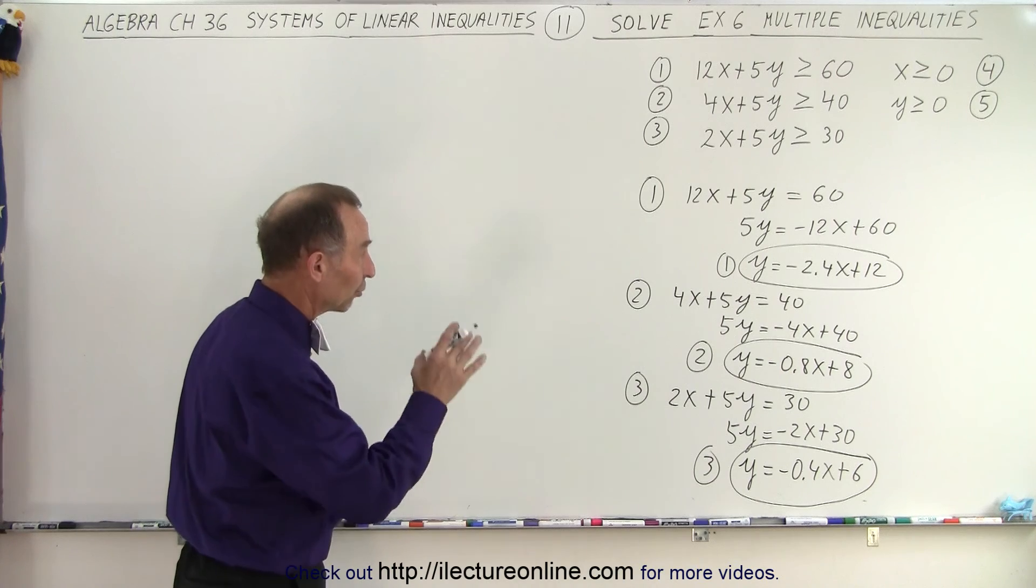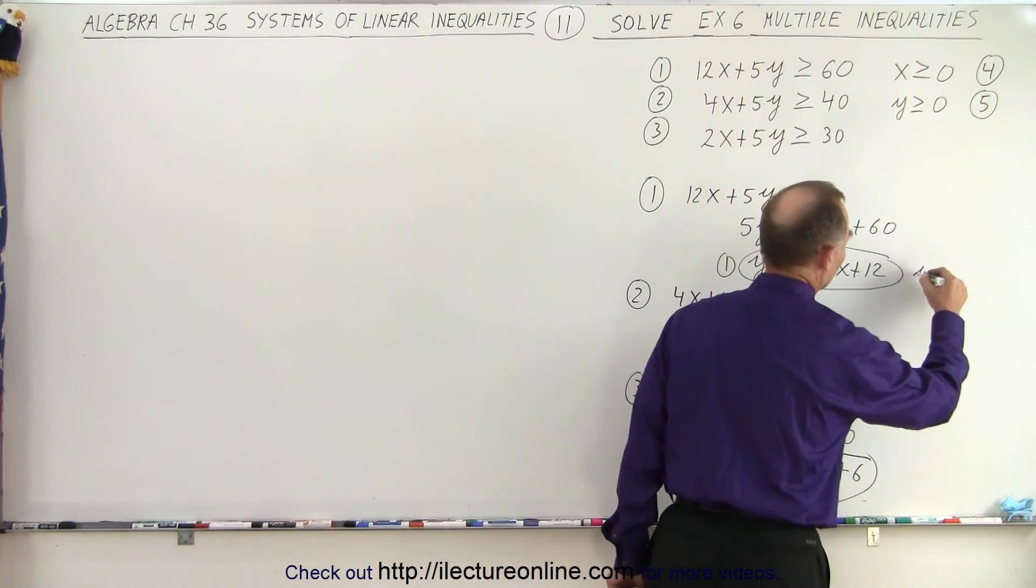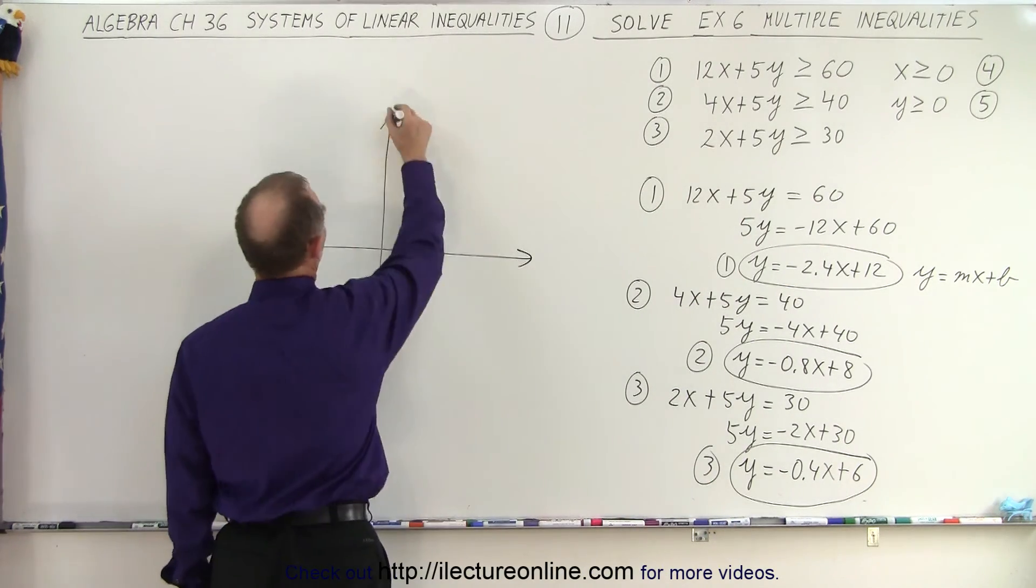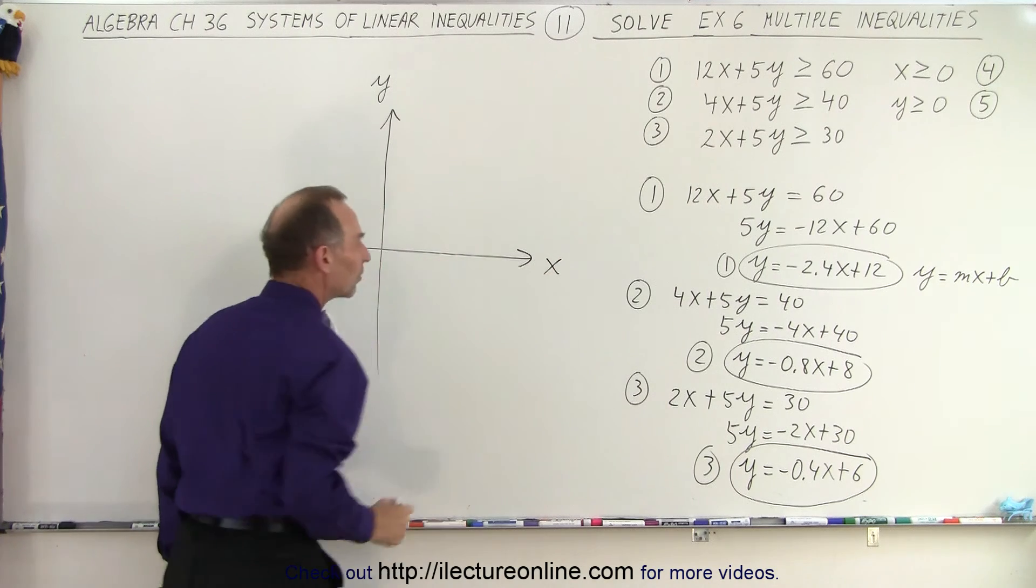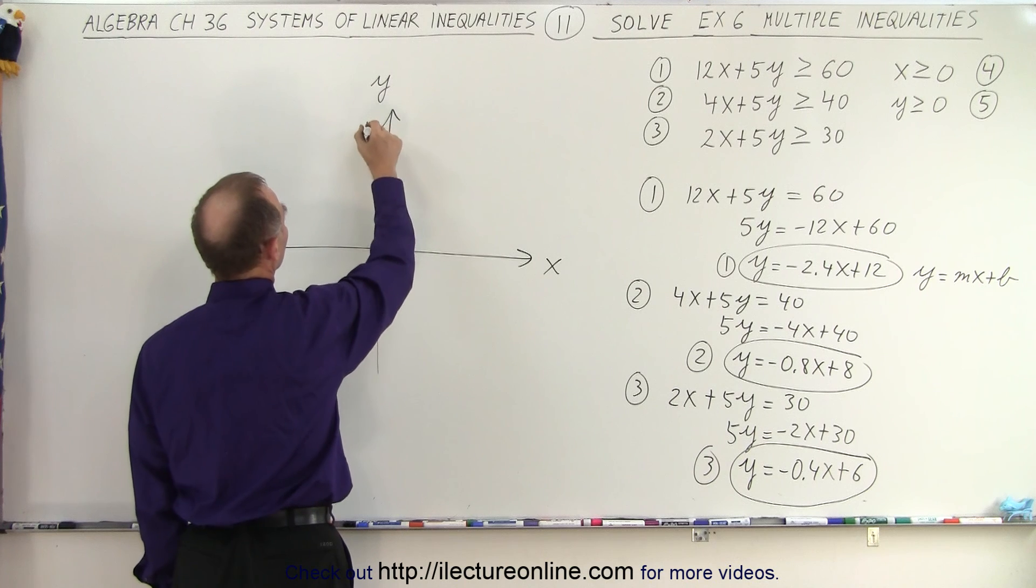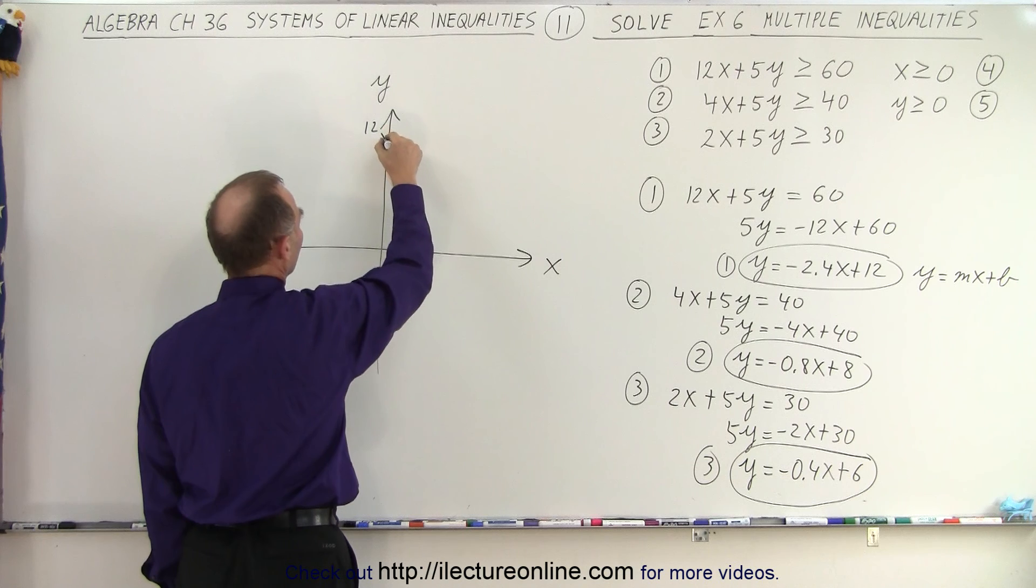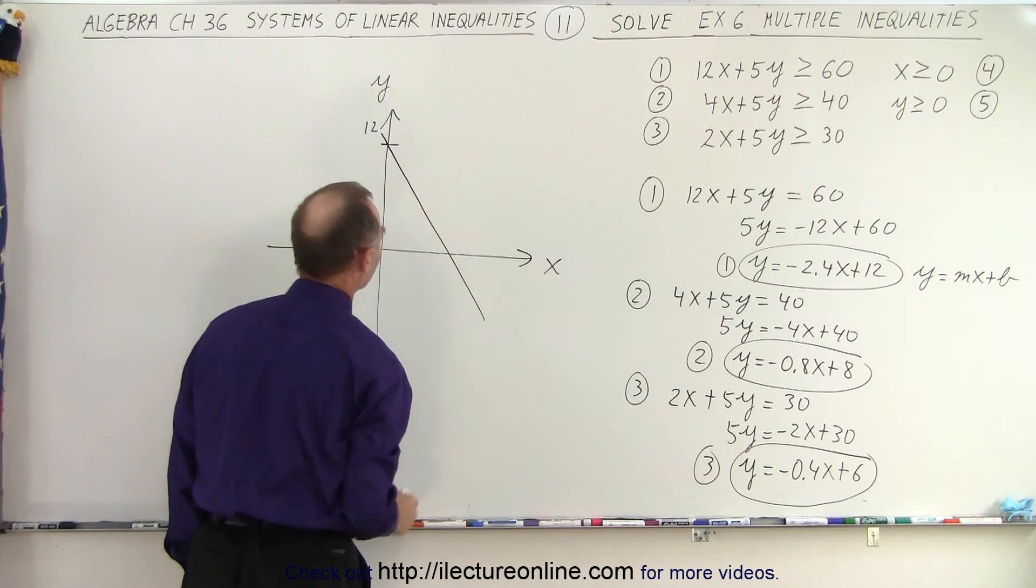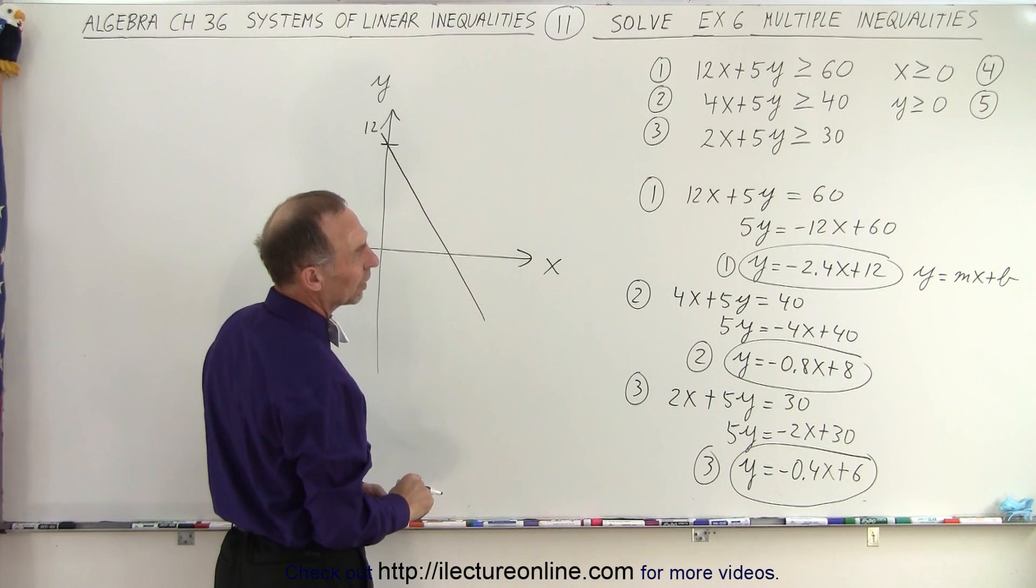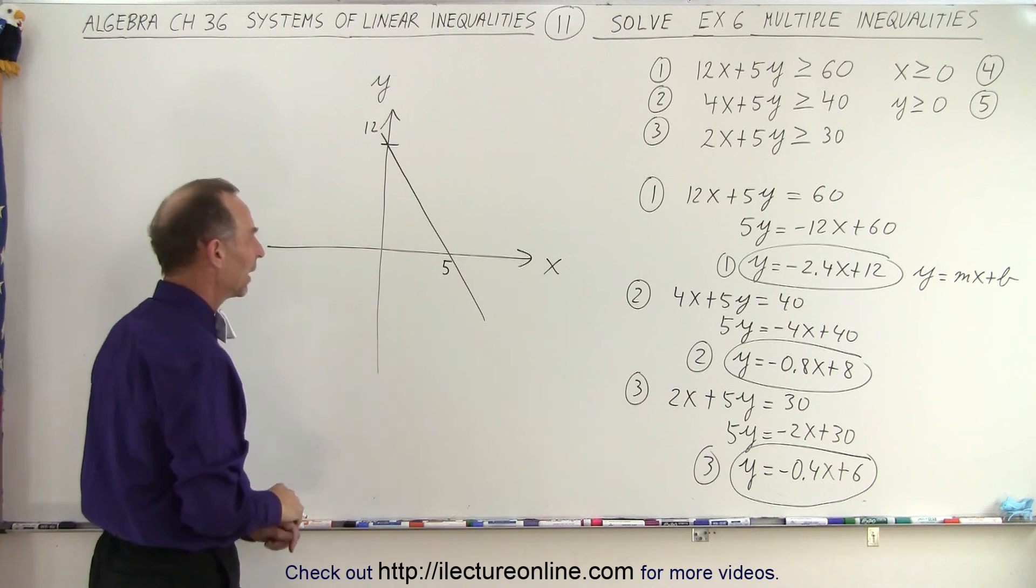So what we're going to do now is we're going to graph those three equations. They're all in the y equals mx plus b format. So let's go ahead and graph the xy plane, y-axis, x-axis. Okay, for equation number one we start at plus 12 right here and the slope is negative 2.4x so that's a fairly steep slope, so it looks kind of like this. And that would put this at possibly 5, yep that would be correct.